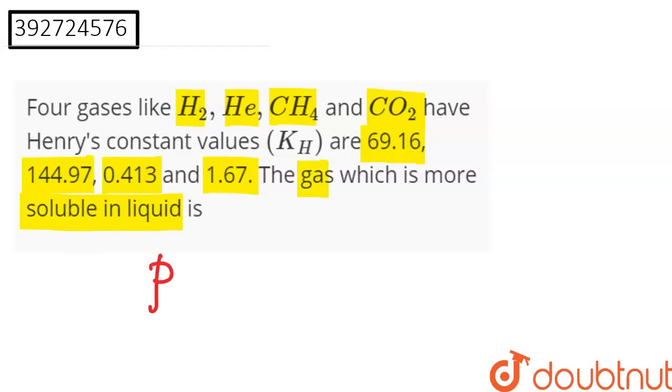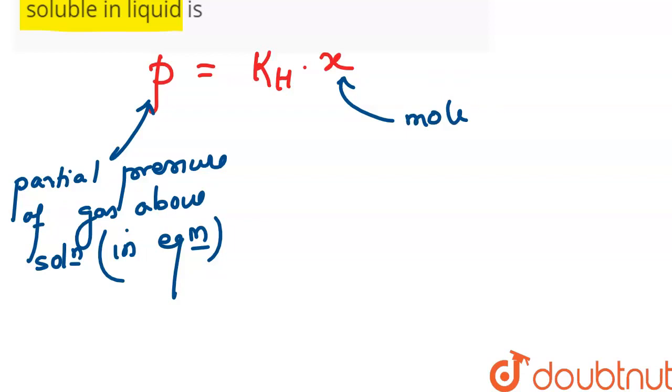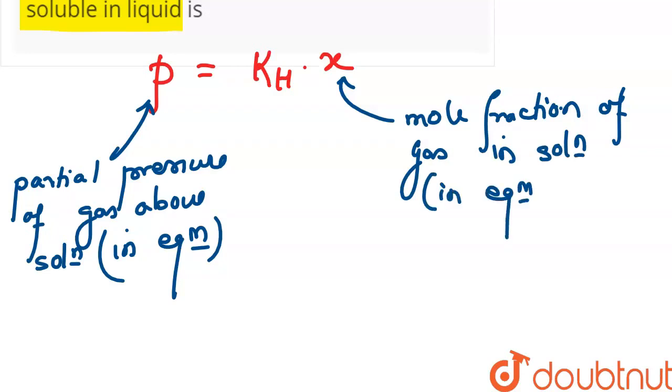This question comes from Henry's law, which says that P equals to KH into X. We have to understand the terms first. P, what is it? It is partial pressure of gas above the solution in equilibrium. And X, what is it? Mole fraction of gas in solution in equilibrium.